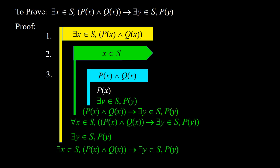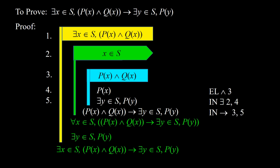Now we get px by elimination of and from 3, indicated with 4. Then we get for some y element of s, py, by introducing the existential quantifier to 2 and 4, indicated with 5. Now we establish px and qx implies for some y element of s, py, by applying the introduction of implication to 2, 3, and 5, indicated with 6.